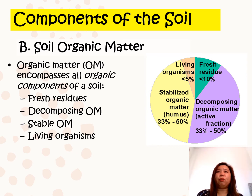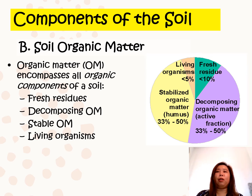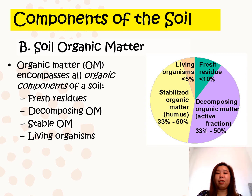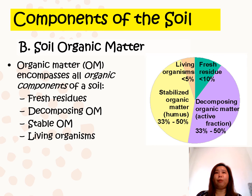Fresh residue is about less than 10%; an example is fresh fallen leaves. Decomposing organic matter, or the active fraction, can comprise 33 to 50% of the organic matter — an example being actively decomposing animal manure. Stable organic matter, or humus, which is completely decomposed, also comprises 33 to 50%. Living organisms comprise less than 5% of the organic matter.